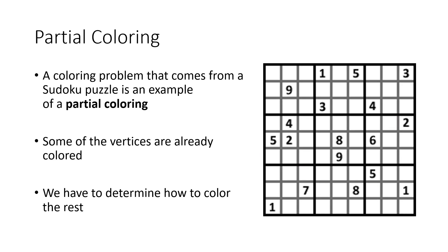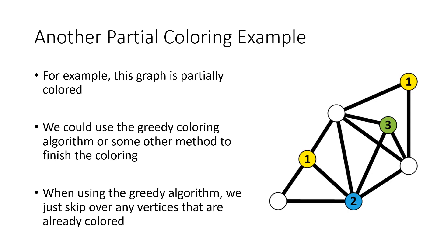This is an example of a partial coloring, because if we look back at the original puzzle, some of those boxes are already filled in with numbers. The vertex corresponding to a pre-filled box is already colored — for example, one box might already be colored with color number 1, another with color number 9. So we're given some colors and have to fill in the remaining ones. We could use a greedy coloring algorithm for the remaining vertices to finish the coloring, and if we reach a vertex that's already colored in our list, we just skip over it.